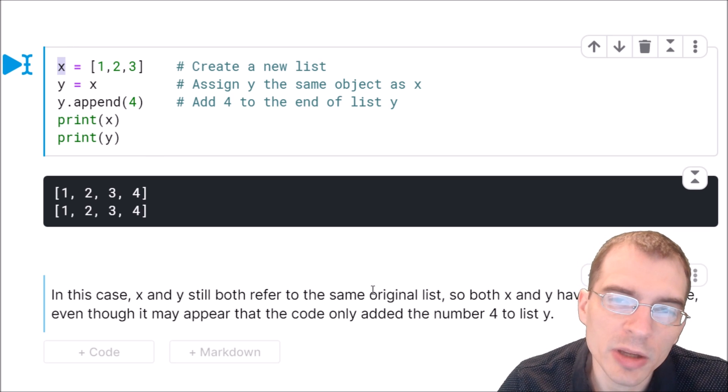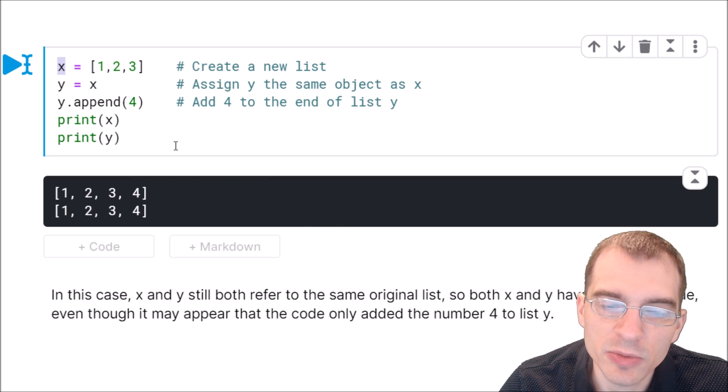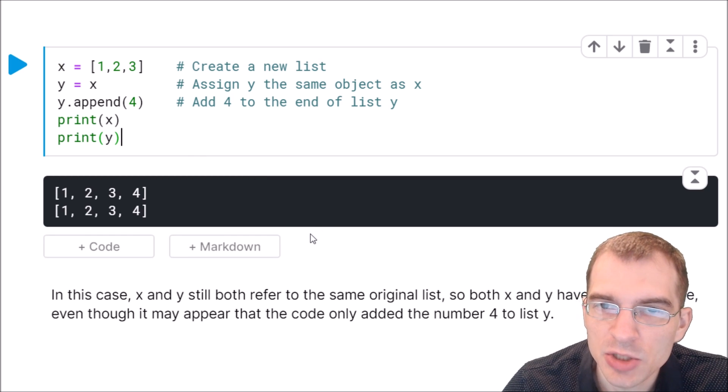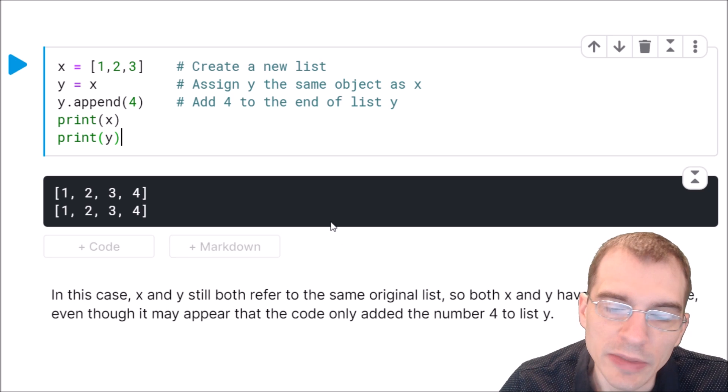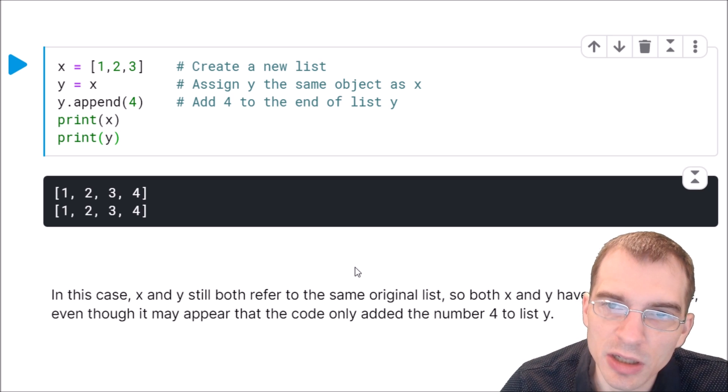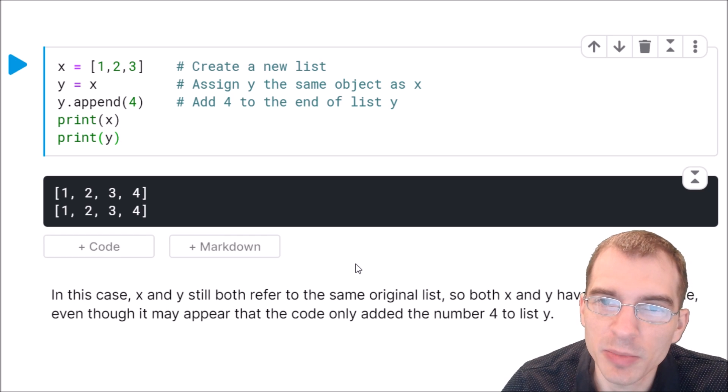That's something to be wary about when using Python. When you're dealing with mutable objects, sometimes you can be changing something in memory, and then other variables you assign might also be changing in ways that are unexpected. So it's just important to keep that in mind.